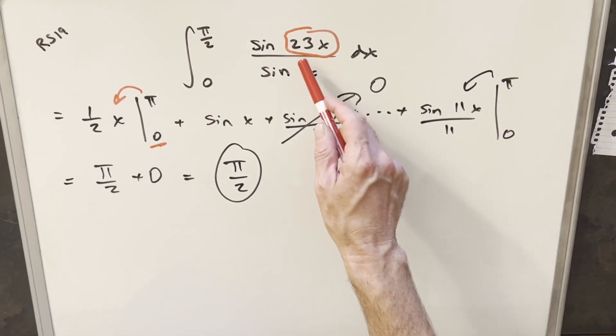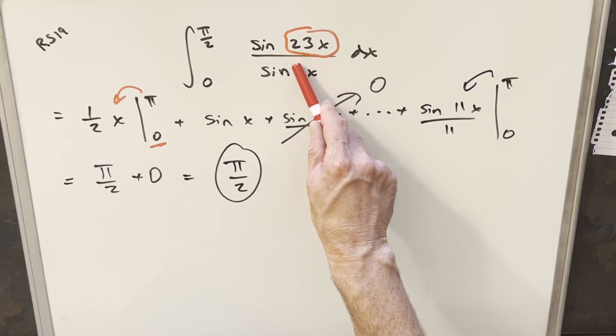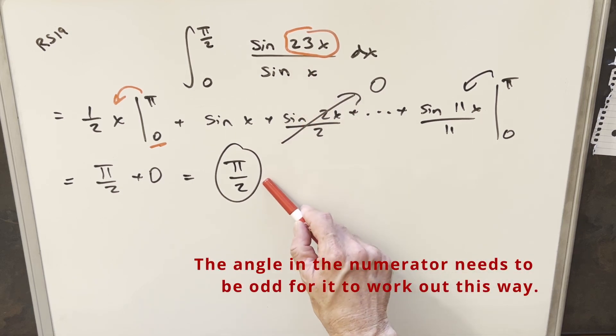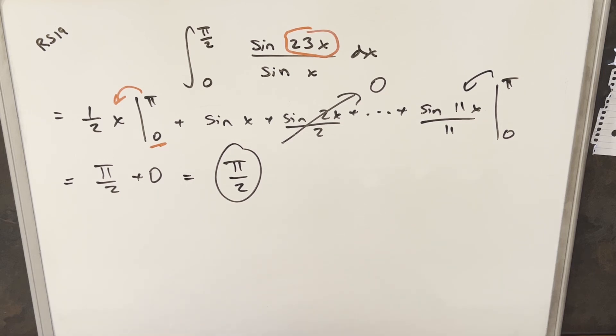So the big surprise for me is they used 23 when they could have used 2023, which is still an odd number. And if this was 2023, you'd get the same answer, pi over 2, because it doesn't really matter how many of these terms you have, they're all going to zero. So it's interesting, regardless of whatever angle they put there, this is actually a problem that could probably be done in like five seconds. So we'll stop it there.